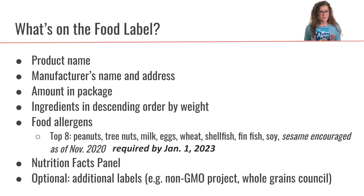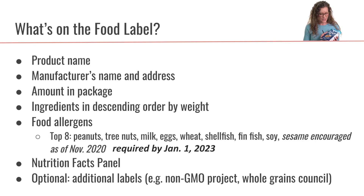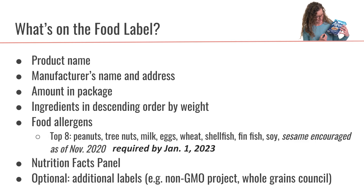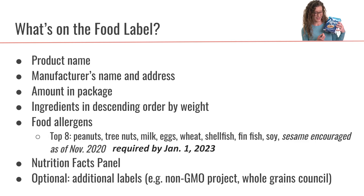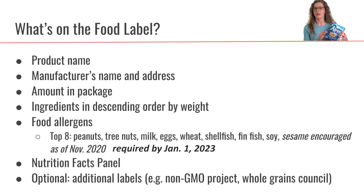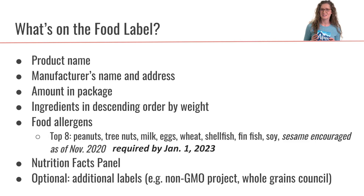Those are the requirements for a food label. There are also optional things that can be on there for marketing purposes. For example, this Alpen muesli has a non-GMO verified label and a whole grain label — that's a whole other very interesting, somewhat complicated story for another day.